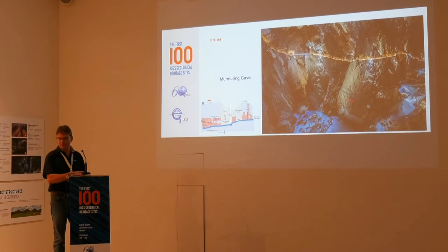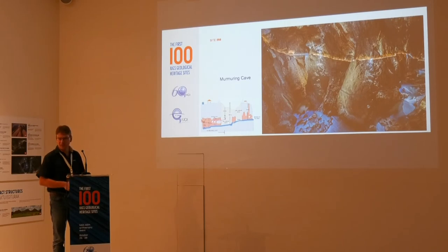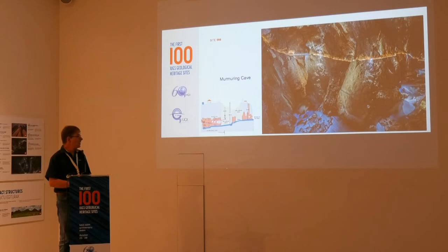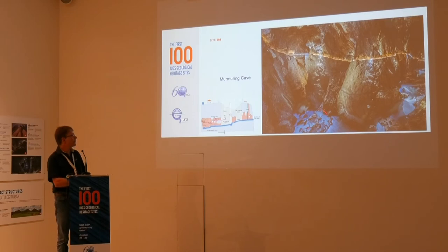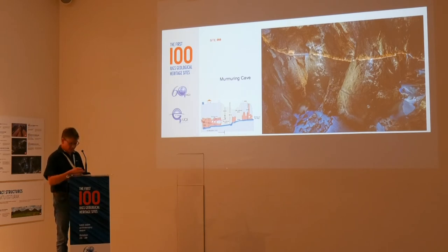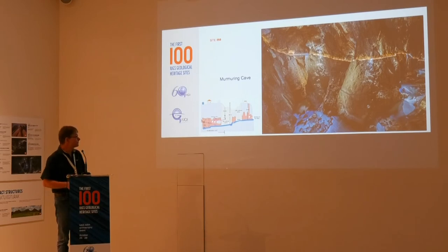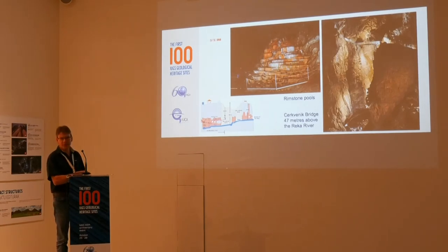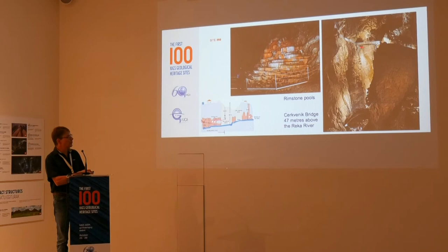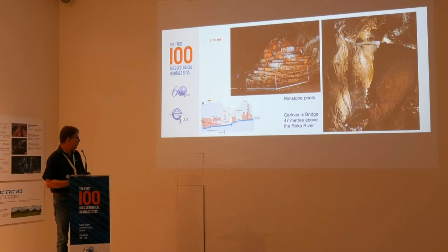Now we enter the main part of the Škocjan Caves — the underground part, the nicest part, with the River Reka, which is of torrential character. In times of floods or heavy rain, sometimes the river rises almost to this bridge — about 45 meters high the river rises on such occasions. We are now in the Murmuring Cave, as they call it. We have very nicely developed speleothems there — not only stalagmites and stalactites, but also rimstone pools. This is one of the bridges you pass when visiting the cave touristically — it is 47 meters above the bottom of the valley.